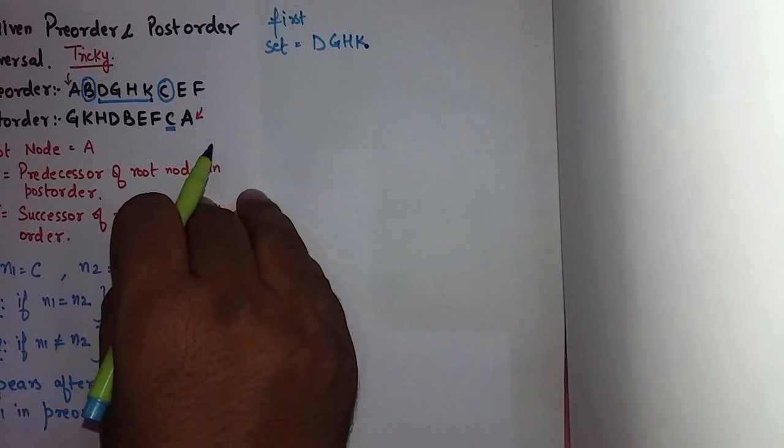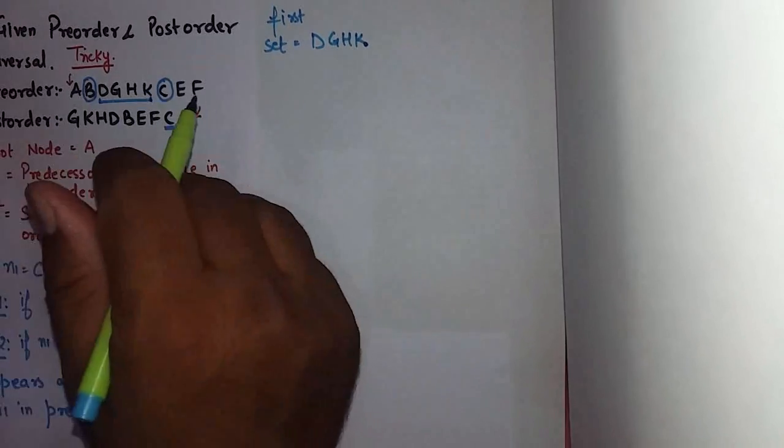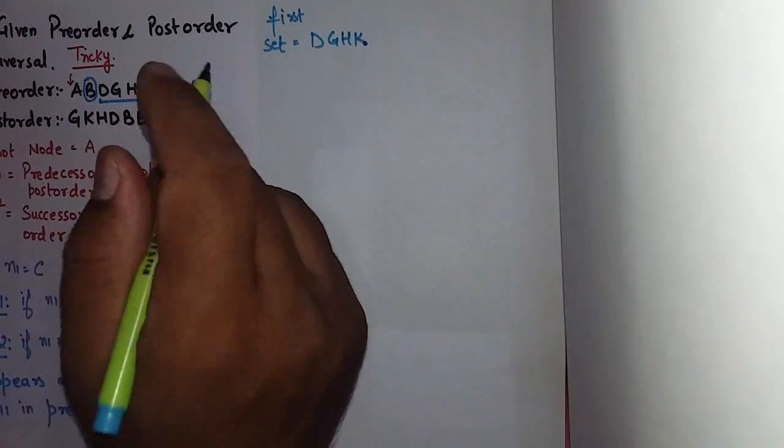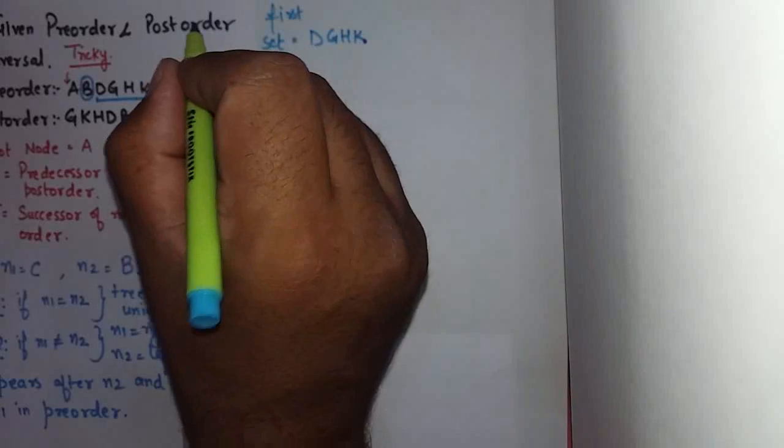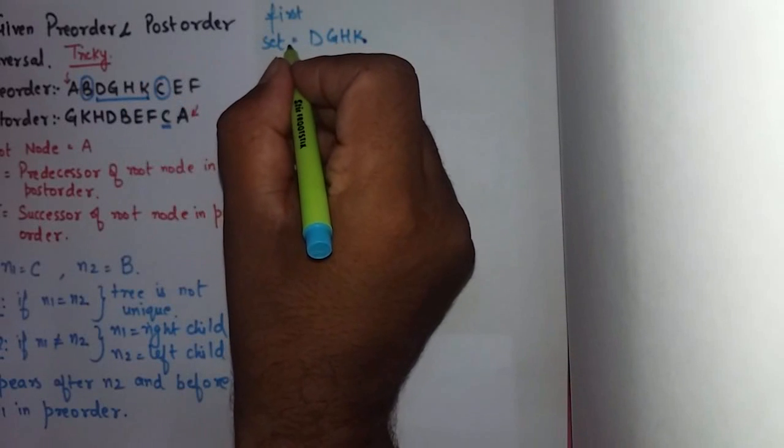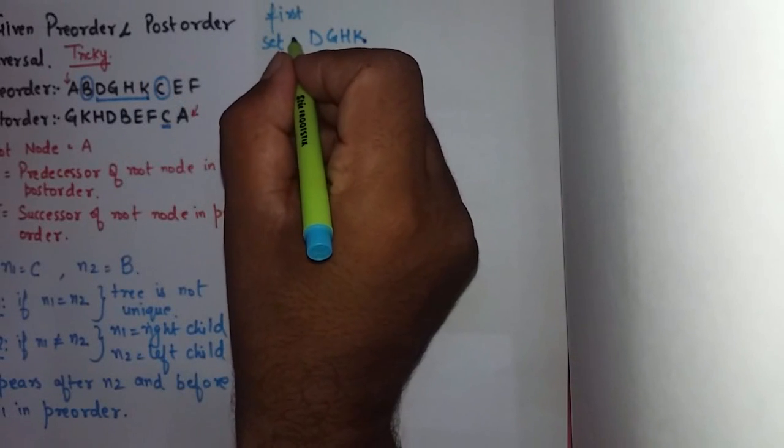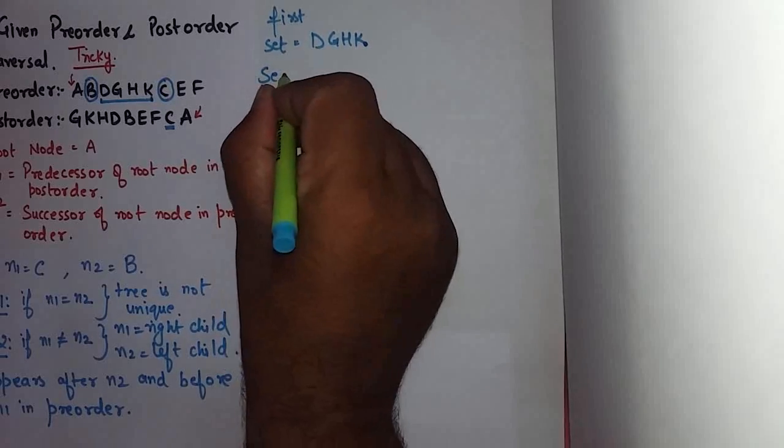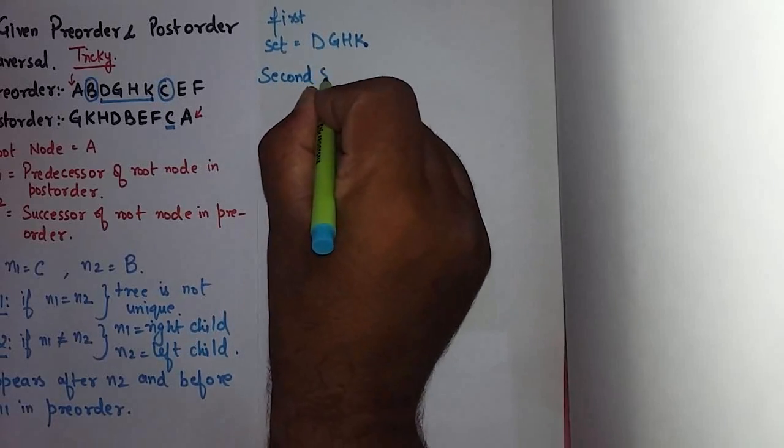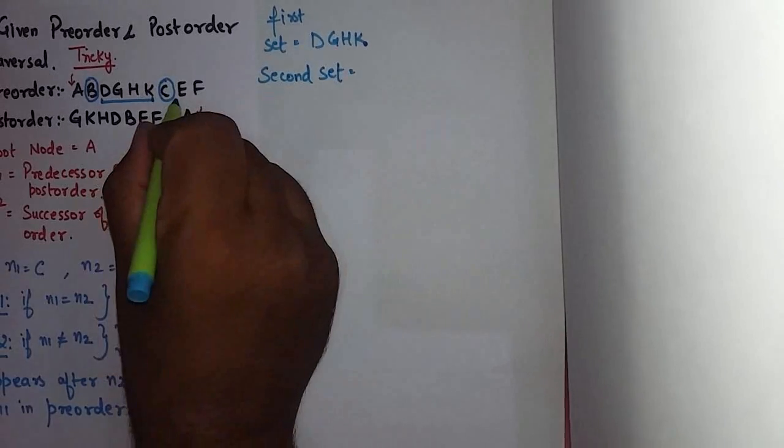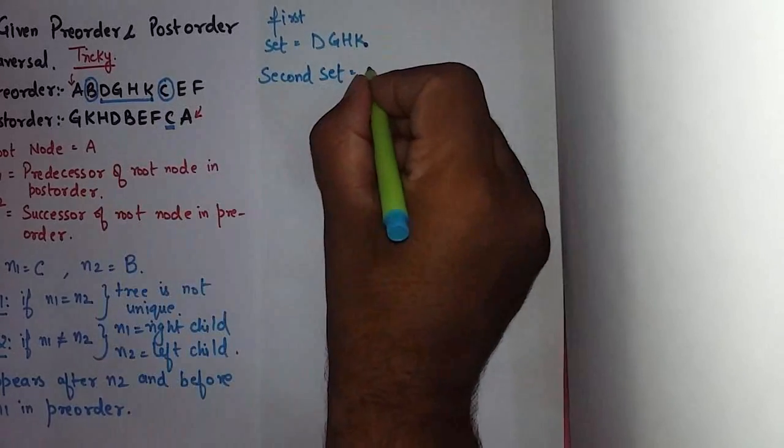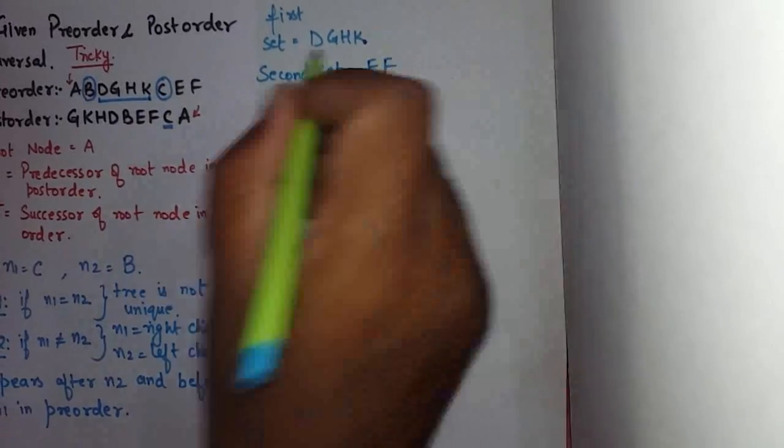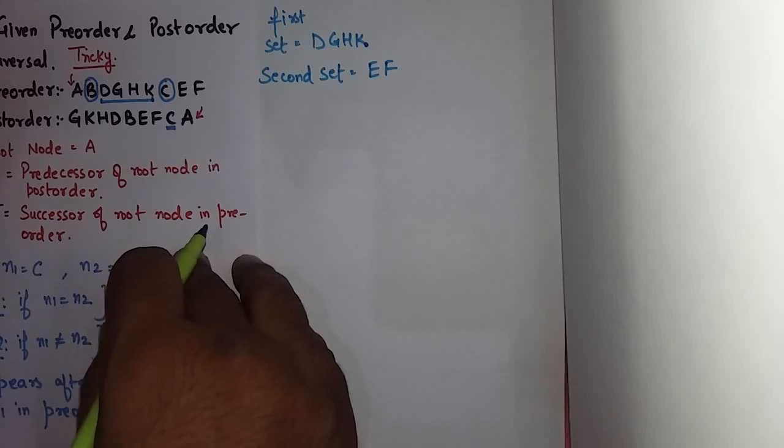Similarly we need to find second set, and second set is the nodes that appear after N1 in pre-order traversal. After N1, so second set will become, after N1 is E and F, so second set will be E and F.